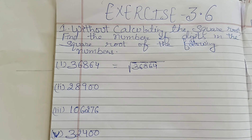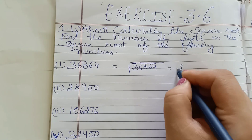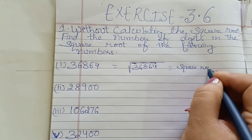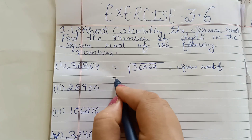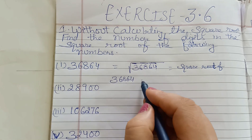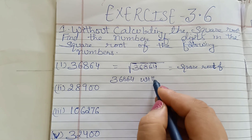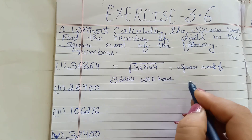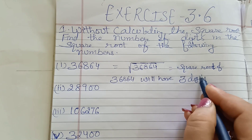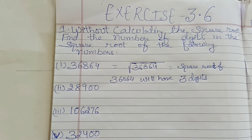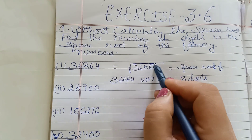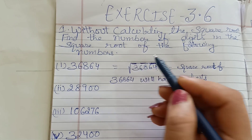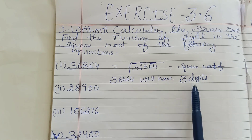The number of bars is equal to the number of digits in the square root of that number. Jitnay number of bars aayenge, utnay number of digits aayenge uska square root karne peh. Start karna right side se, pairing mein karne — one, two, three. Three bars aaye, so iske square root mein three digits honge.